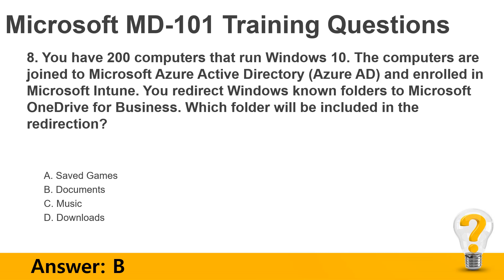Question 8. You have 200 computers that run Windows 10. The computers are joined to Microsoft Azure Active Directory (Azure AD) and enrolled in Microsoft Intune. You redirect Windows known folders to Microsoft OneDrive for Business. Which folder will be included in the redirection?